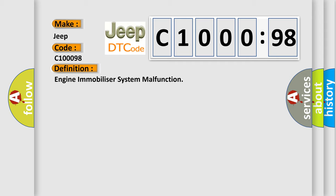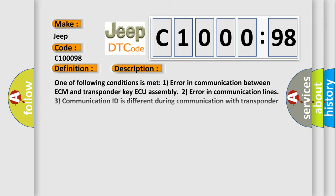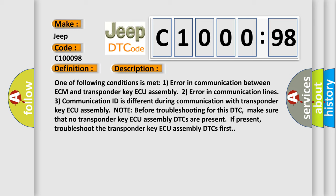And now this is a short description of this DTC code. One of following conditions is met: one, error in communication between ECM and transponder key ECU assembly; two, error in communication lines; three, communication ID is different during communication with transponder key ECU assembly. Note: before troubleshooting for this DTC, make sure that no transponder key ECU assembly DTCs are present. If present, troubleshoot the transponder key ECU assembly DTCs first.